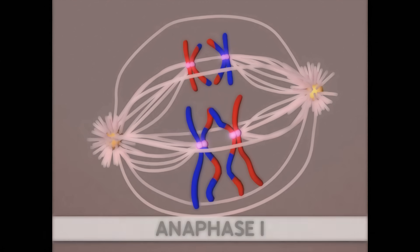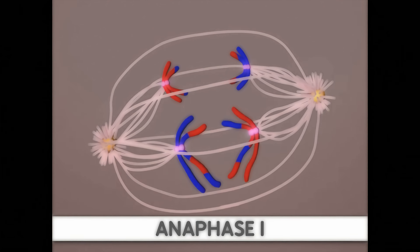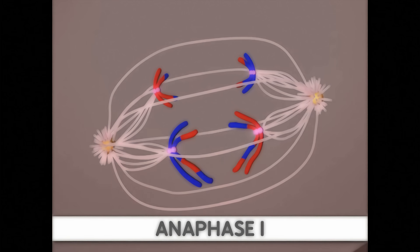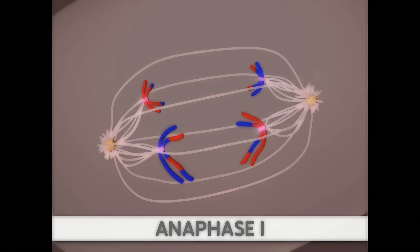The next phase is anaphase I. During this phase, homologous chromosomes separate and migrate to the two poles of the cell. Importantly, the sister chromatids remain attached at their centromeres.